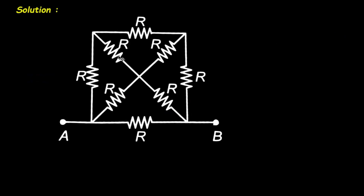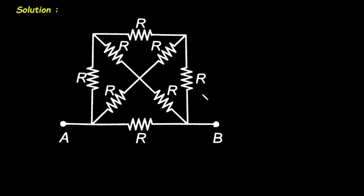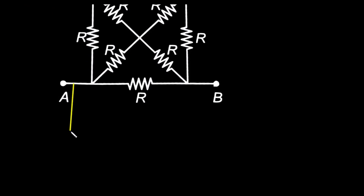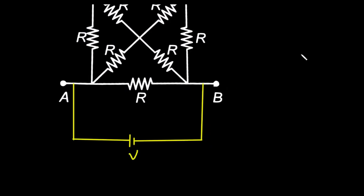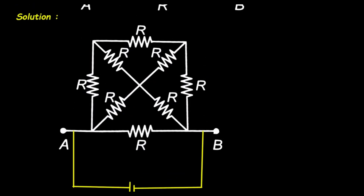Solution. First of all, we will take this circuit. Now here we can see this is a symmetrical circuit. So let's assume if we apply a voltage V between terminals A and B. Then what will happen? An equal amount of current will flow through these three resistances and through these other three resistances.